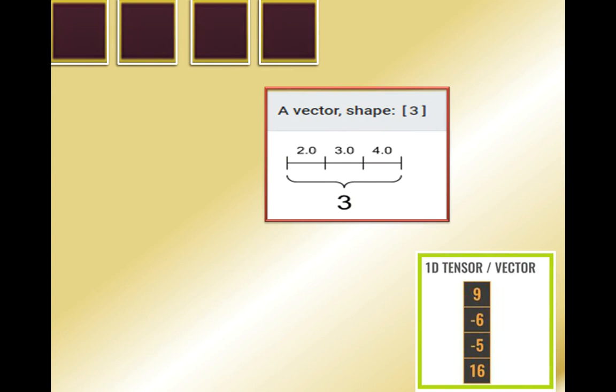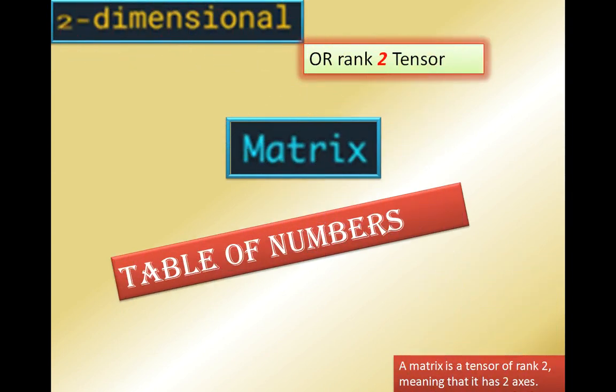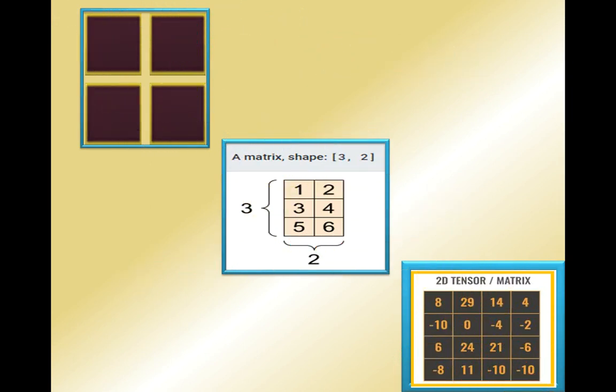Two-dimensional or rank-two tensor. A two-dimensional tensor is similar to a two-dimensional matrix. A two-dimensional matrix has n rows and n columns. Similarly, a two-dimensional tensor also has n rows and n columns — it is defined as a table of numbers. A matrix is a tensor of rank two, meaning it has two axes. In this case I have taken a matrix with shape three by two, meaning it has three rows and two columns.